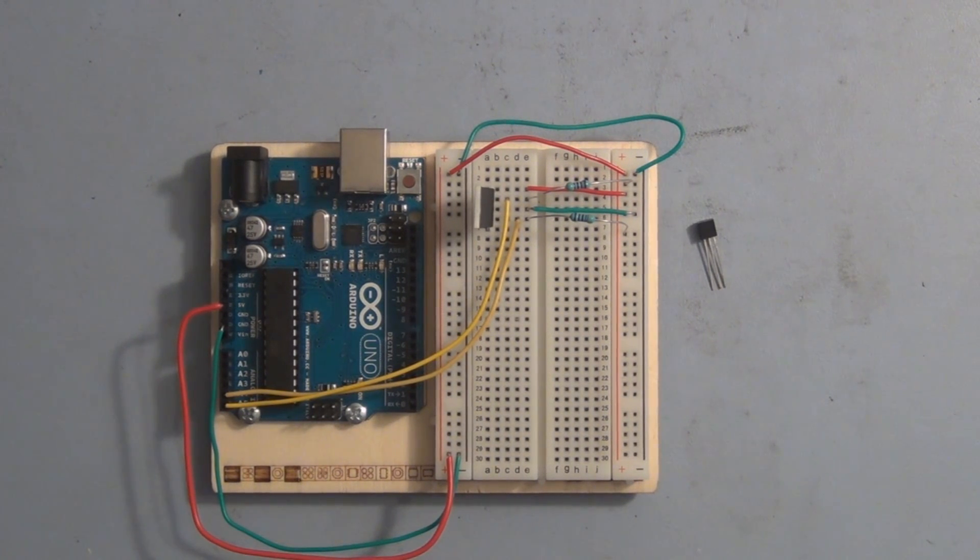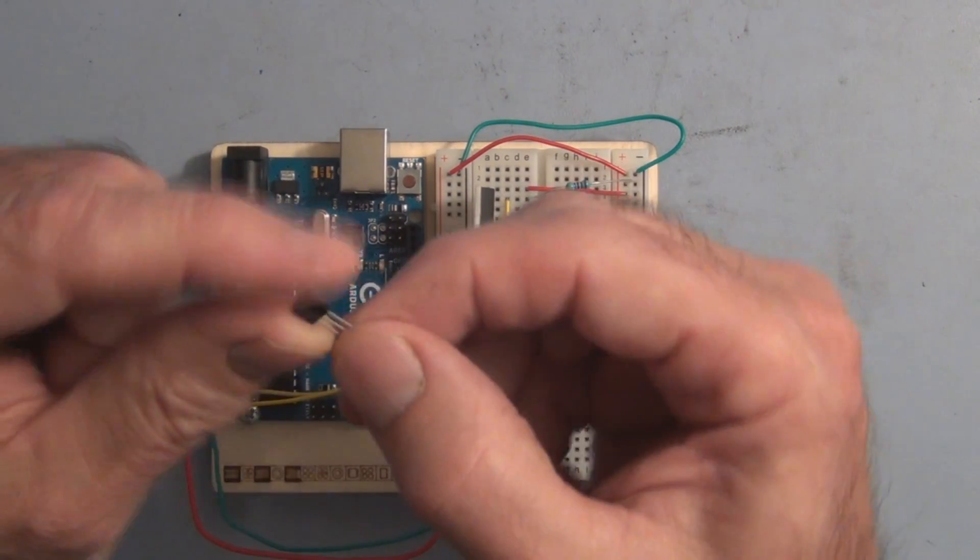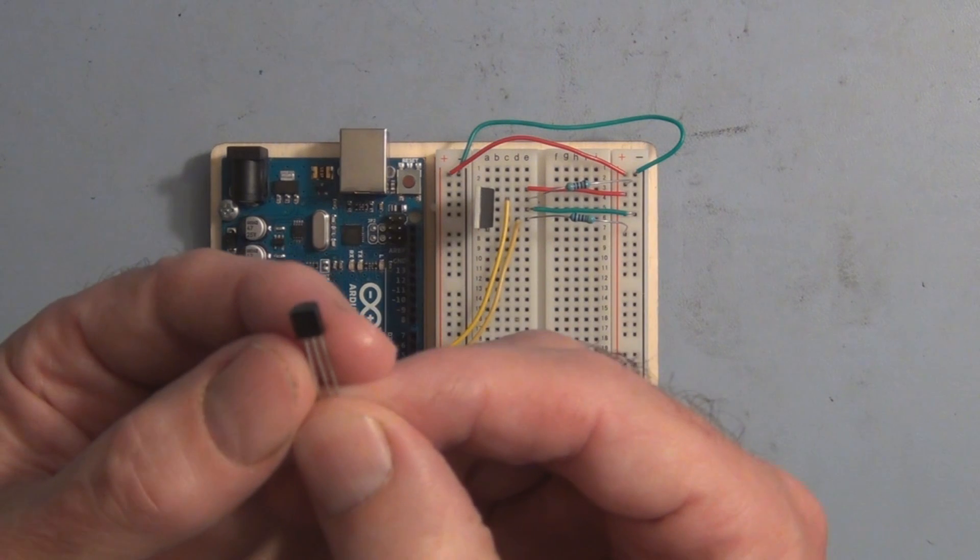Hi everyone, welcome to my channel. In a previous video we measured temperature with the Arduino Uno by using this analog devices TMP36.